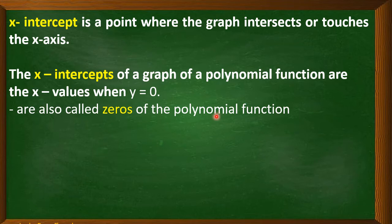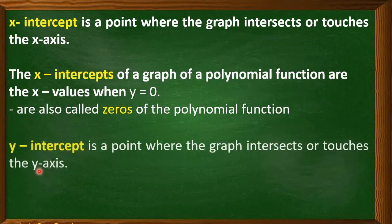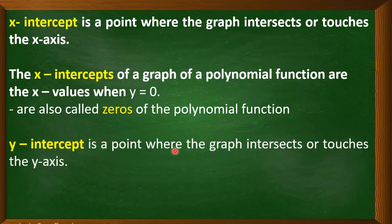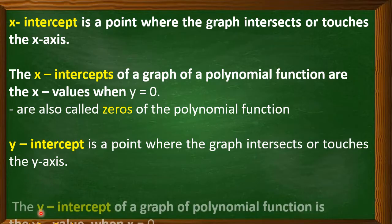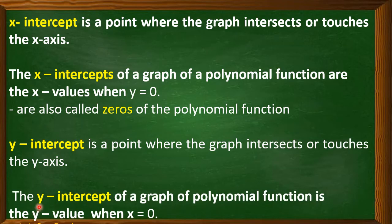On the other hand, the y-intercept is a point where the graph intersects or touches the y-axis. The y-intercept of a graph of a polynomial function is the y value when x is equal to 0.